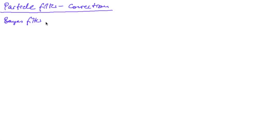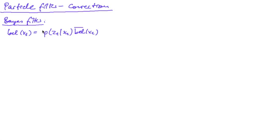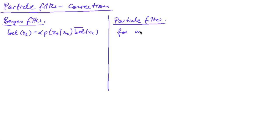Now how does the correction step look like? Remember in the general formulation of the Bayes filter, our new belief was computed by weighting our predicted belief by the probability of the measurement given the state, and we had to normalize this. Now in the particle filter, this is implemented as follows: for every particle, we give the particle a weight.